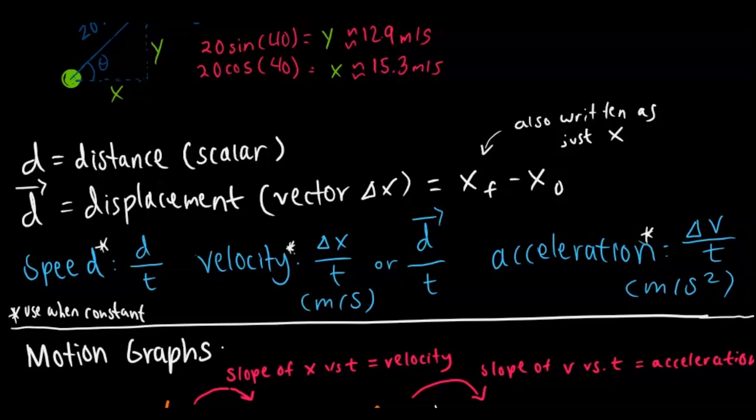Speed is distance over time. Velocity is change in position over time or displacement over time. Acceleration is just how fast your velocity is changing over time. The different units are represented as meters per second for velocity and meters per second squared for acceleration.